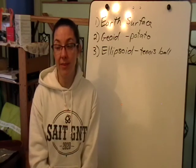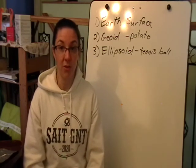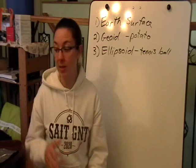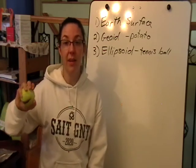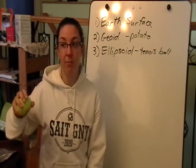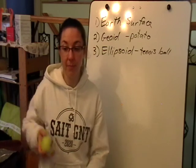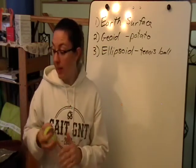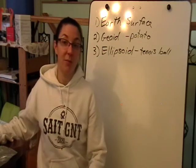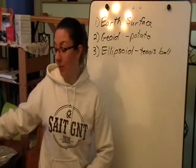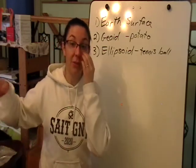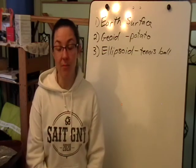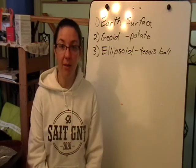That summarizes the three surfaces. Put the tin foil all around the tennis ball and potato, and that gives me the shape of the earth. The next step is how we actually represent this — this is where the mapping side of things comes in.